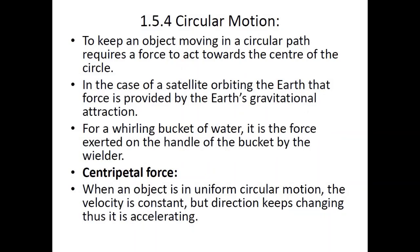To keep an object moving in a circular path, it requires a force that acts towards the center of the circle so that the object can continue to spin in a circular orbit. When considering a satellite or natural satellite such as the moon orbiting a planet like Earth, that force towards the center is provided by Earth's gravitational field. For a whirling bucket of water being spun in a circular motion, it is the force exerted on the handle by the person that keeps the bucket moving in a circular motion.